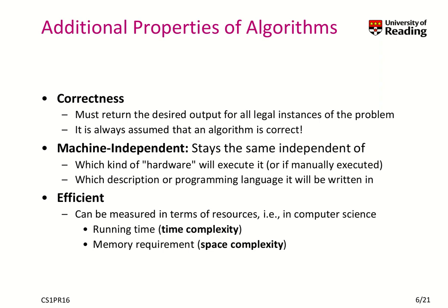We assume that an algorithm is correct, otherwise you would change it such that it always produces the correct output. If you do addition of two numbers but the algorithm doesn't guarantee the result — say three plus five gives five instead of eight — that is a broken algorithm, you need to fix it. All algorithms must be correct; we assume that is the case.